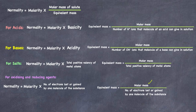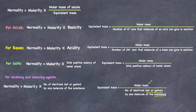For oxidizing or reducing agents, equivalent mass = molar mass / number of electrons lost or gained by one molecule of that substance. Again the molar mass cancels, giving: Normality = Molarity × number of electrons lost or gained by one molecule of the substance. This is the complete mathematical relationship between normality and molarity, which is very useful for solving numerical problems.